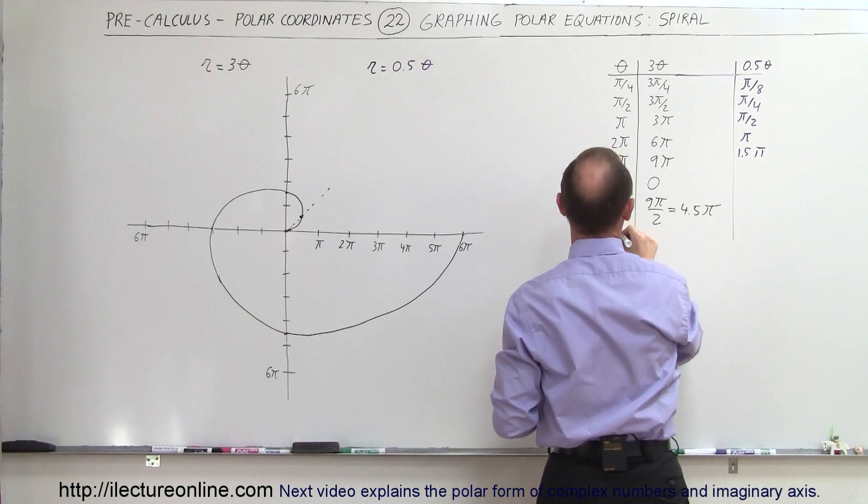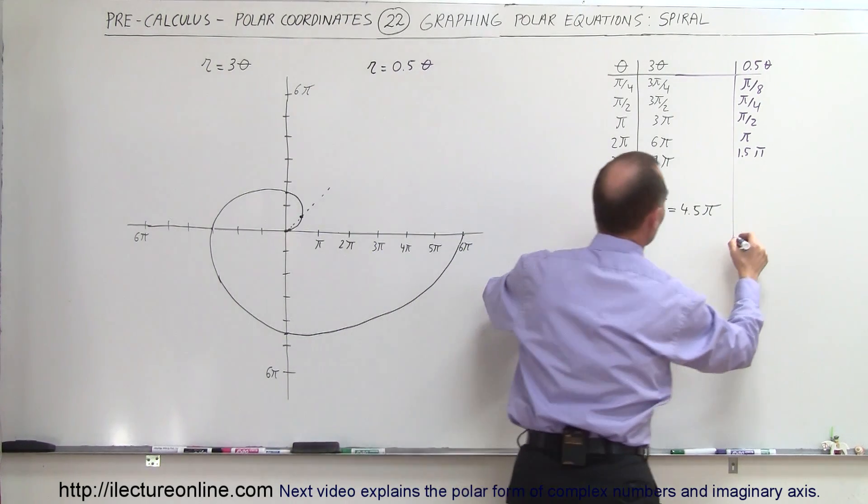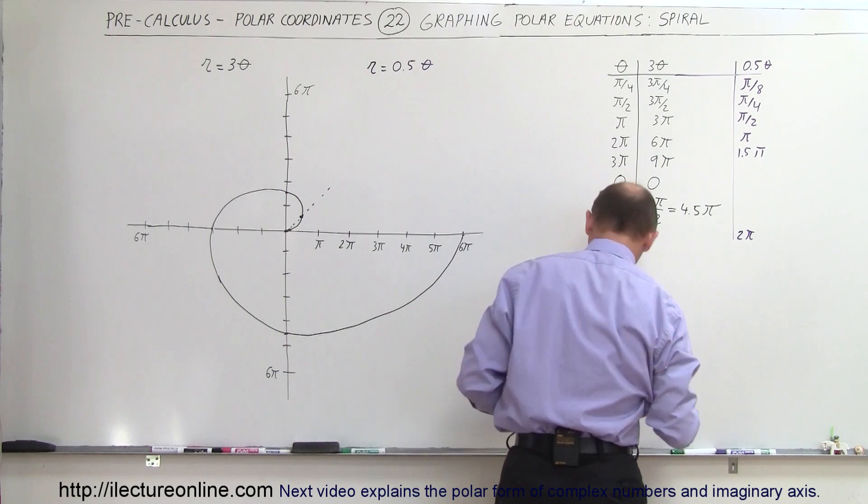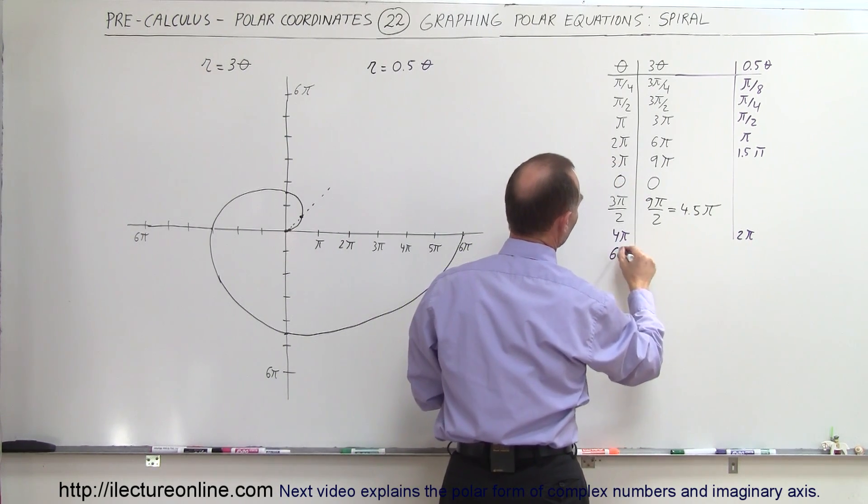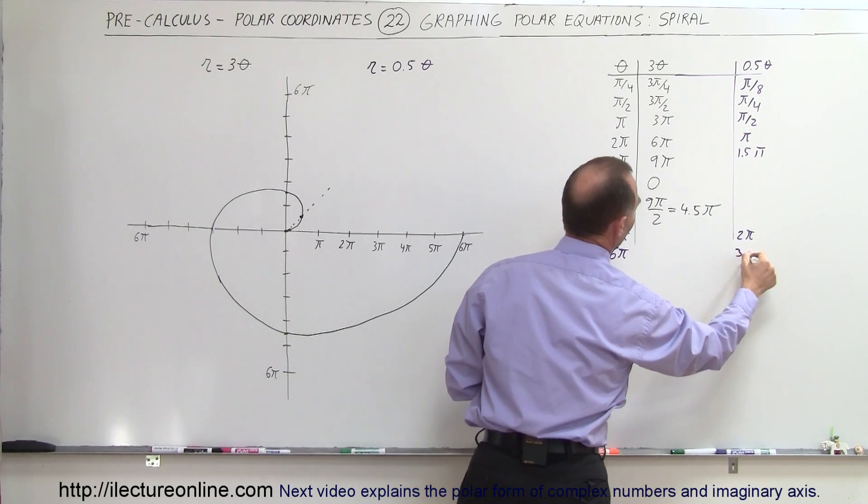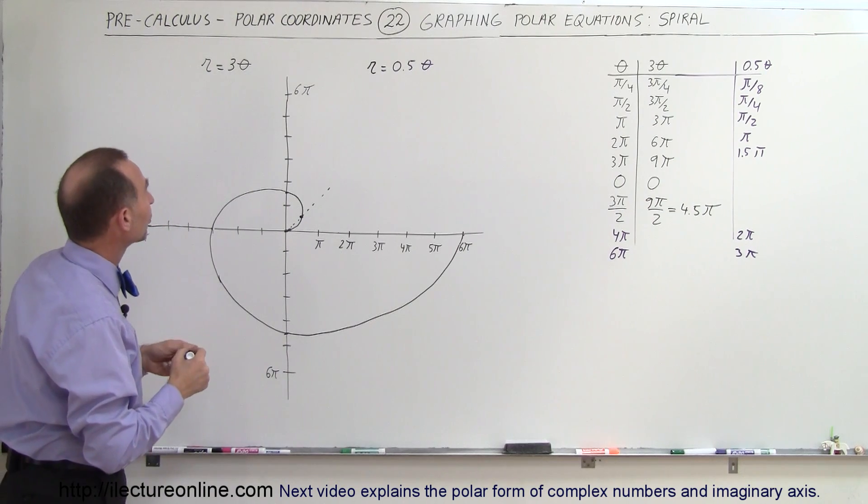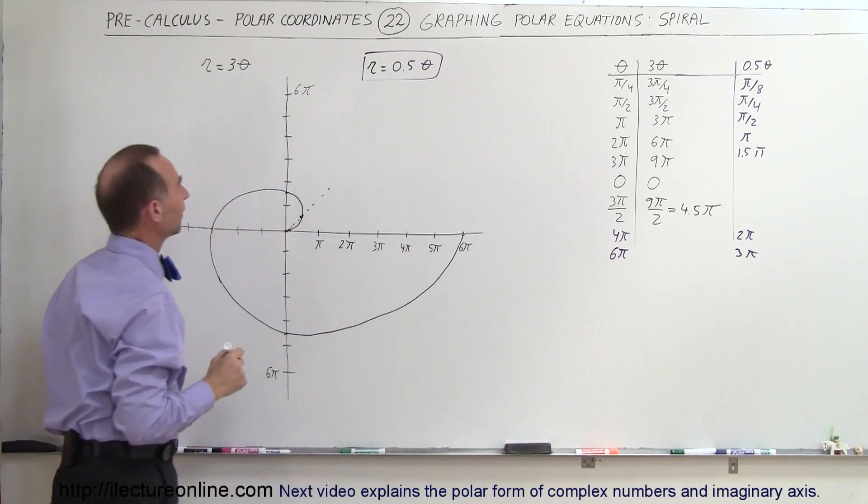3π would be 1.5π, and so forth. So if we have, for example, 4π, which would be 2 circles, 2 complete circles, then we know the radius would be 2π. If we have, not 3π, but 6π for 3 complete circles, 6π, half of that would be 3π. And now I think we have enough pairs of numbers there that we can come up with a different graph for this. All right, let's try that.